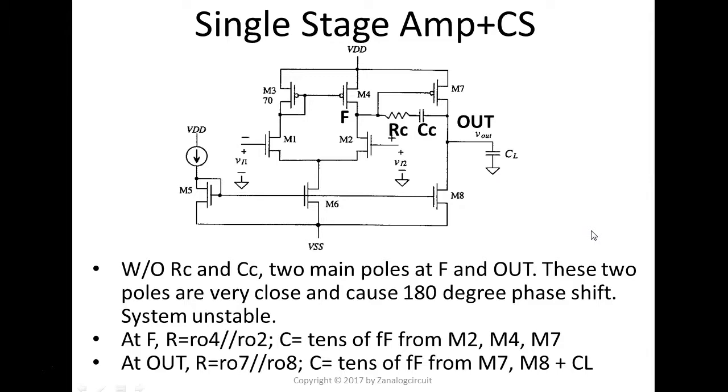So now let's take a look at the compensation cap here. So let's say without the compensation cap, for now, along the signal chain, there are two high impedance nodes. One is F, the other is OUT. For the node F, when looking to the node F, there's an output resistance that's RO of this M4 in parallel with the RO of this M2 here. And also, the capacitance, it's more from the gate capacitance from the M7, the drain source capacitor, the drain capacitance from the M4, M2. So if you add them up, that's about tens of femtofarads. So there's a pole at the F node in that range.